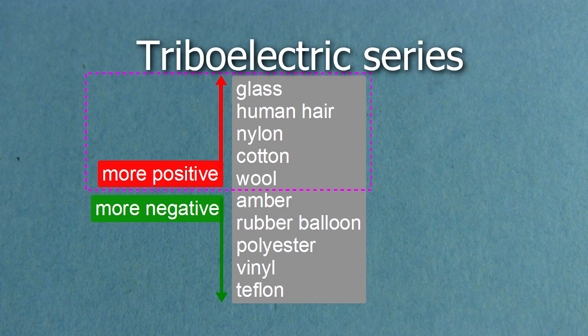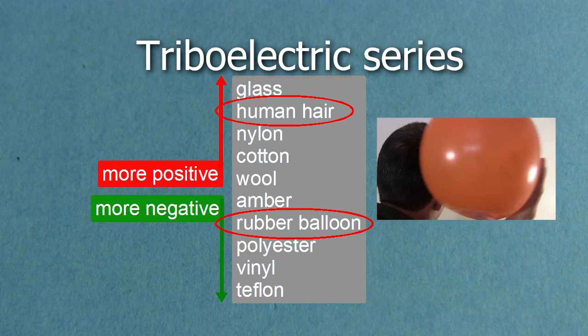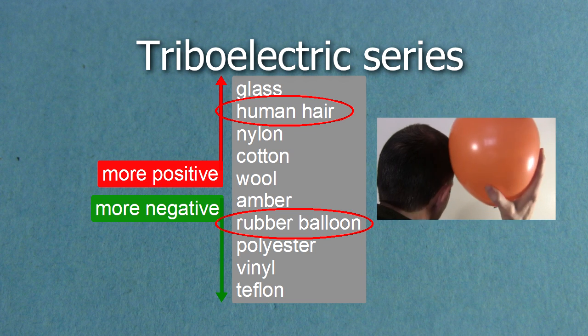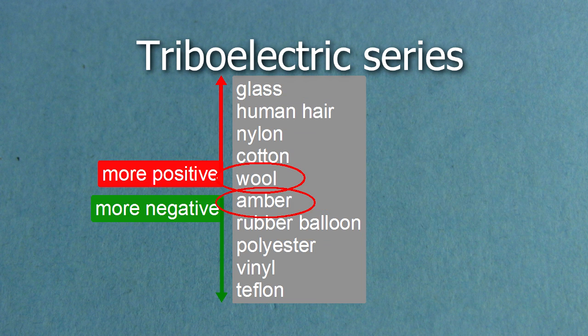Some are on the positive side of the list and some are on the negative side. Also, the farther apart the two materials are in the series, the better it works. So rubber, like our rubber balloon, is far apart from hair, so they work well together. But amber and wool are very close together, and won't work as well.